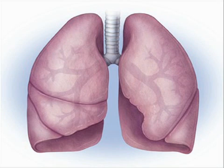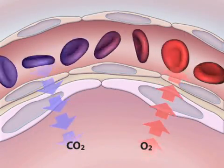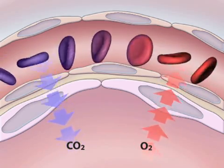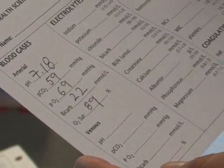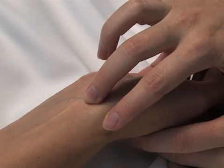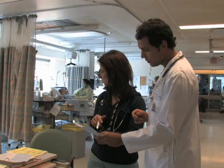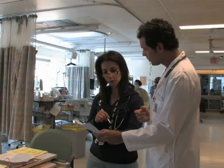Arterial blood gas analysis provides useful information regarding respiratory and metabolic pathology. The partial pressure of carbon dioxide, bicarbonate concentrations, and pH values will assist in diagnosing primary or mixed respiratory and metabolic acidosis or alkaloses. The partial pressure of oxygen will reveal abnormalities in blood oxygen content and the presence of hypoxemia. With the appropriate technique, radial arterial puncture for arterial blood gas analysis is a skill easily mastered by medical trainees. A more detailed approach to acid-base disorders and hypoxemic respiratory failure, while necessary, is beyond the scope of this instructional video.